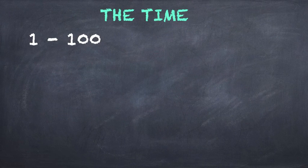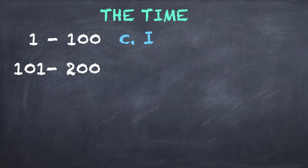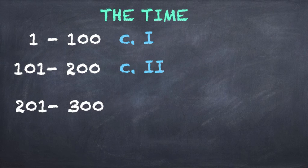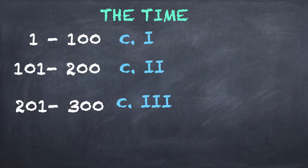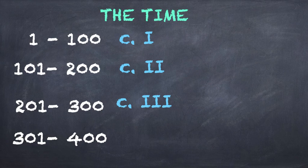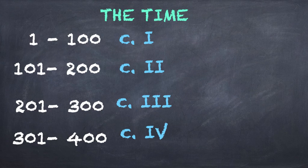So a century goes from the year 1 to 100, that is the first century. The 101 to 200, that is the second century. The 201 to 300, we have the third century. The 301 to 400 is the fourth century, and on and on.